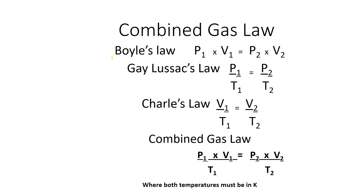The Combined Gas Law is a combination of Boyle's Law, Gay-Lussac's Law, and Charles's Law. In Boyle's Law, initial pressure times initial volume equals final pressure times final volume — pressure and volume are inversely proportional. Gay-Lussac's Law states initial pressure divided by initial temperature equals final pressure divided by final temperature. Charles's Law states initial volume divided by initial temperature equals final volume divided by final temperature. This gives us the equation combining all three gas laws.